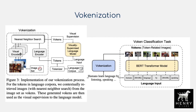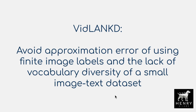The idea behind Vulcanization is to use an image-to-text retrieval model to fetch visual tokens (Vulcans) to supervise the language tokens, so the BERT model predicts these Vulcans. One limitation addressed in VidLandKD is that these Vulcans are classification labels — an output cardinality of 30,000 labels. VidLandKD aims to avoid this finite approximation error and the lack of vocabulary diversity from a small image-text dataset, seeking more visual supervision by building on Vulcanization.